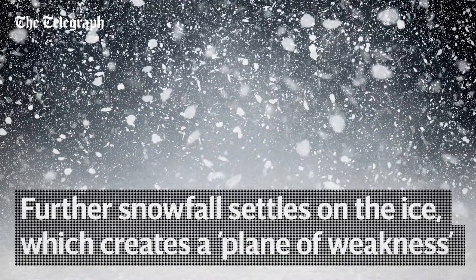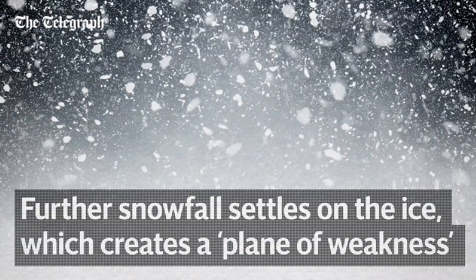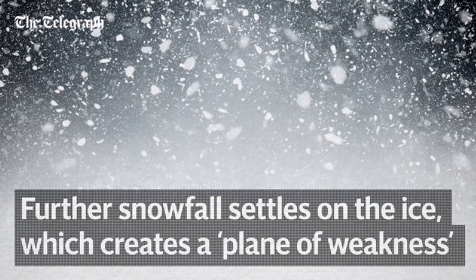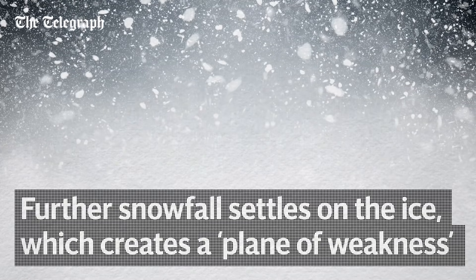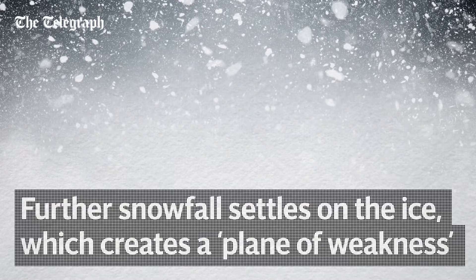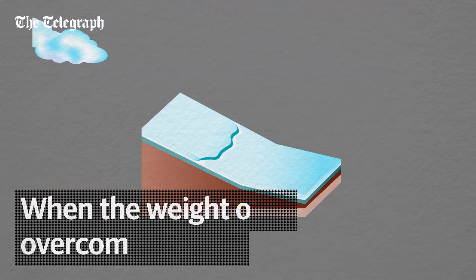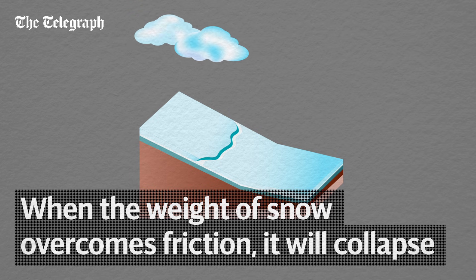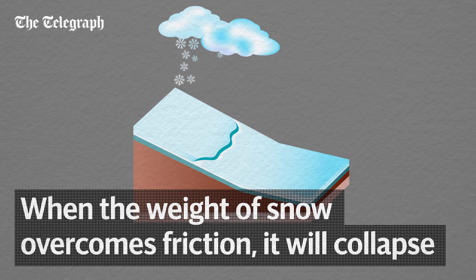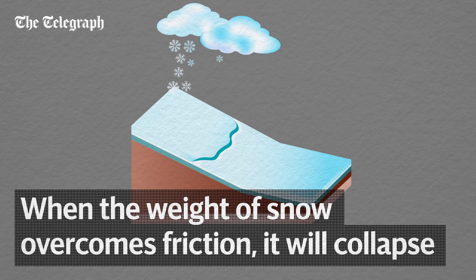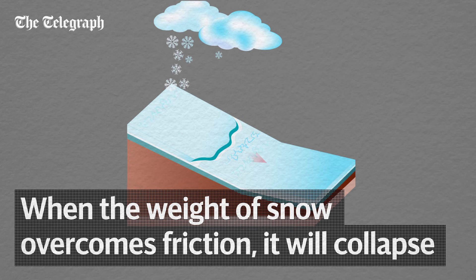Subsequent snowfall will settle on top of that layer of ice. The ice acts as an area of low friction, known as a plane of weakness, which can promote an avalanche. When the upper layer of snow reaches a critical mass, the pressure can overcome the friction resisting it, which is lessened at the plane of weakness.